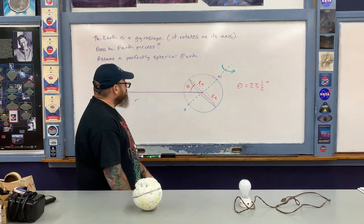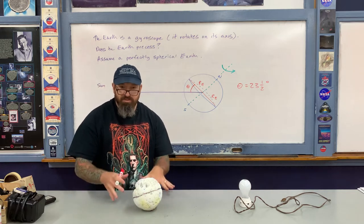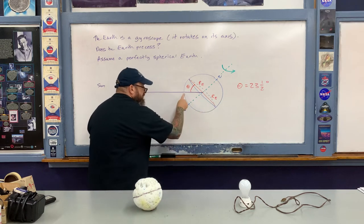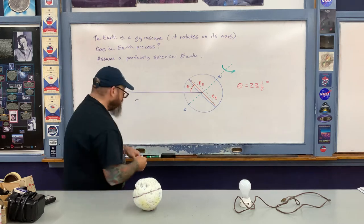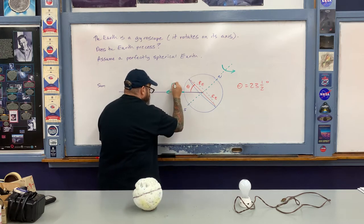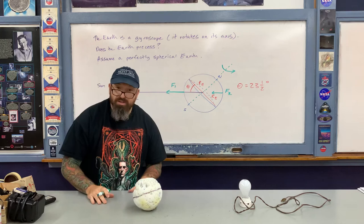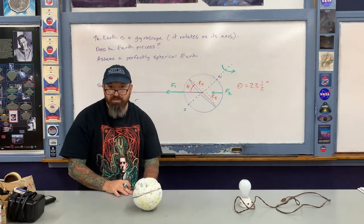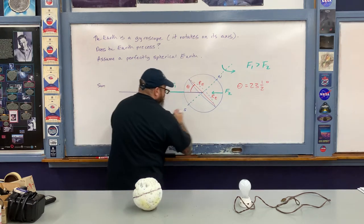The Sun's gravitational force is exerted upon the earth. The side of the earth closer to the Sun experiences a slightly greater gravitational force than the far side, because the force of gravity depends on distance. So we draw in force vectors: F1 on the near side and F2 on the far side, with F1 greater than F2. Now let's look at the moment arms associated with these two force vectors F1 and F2.